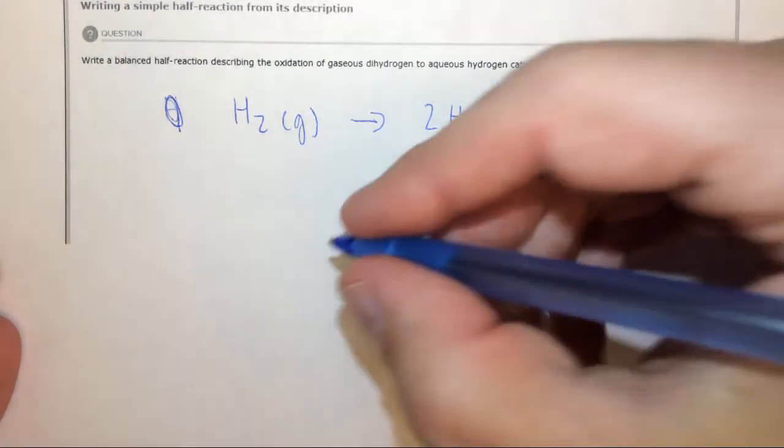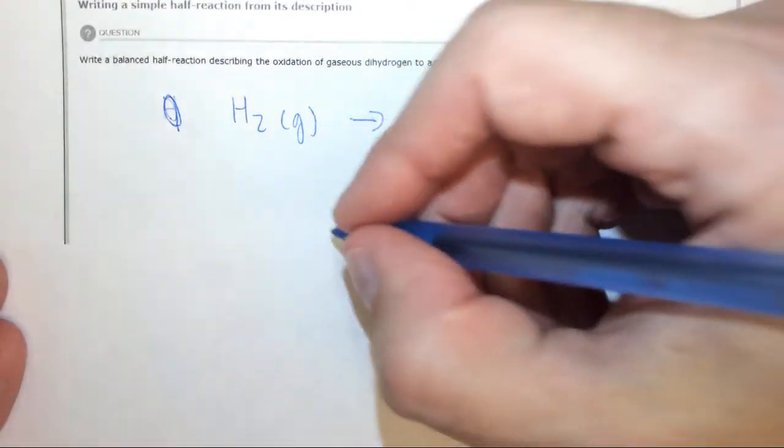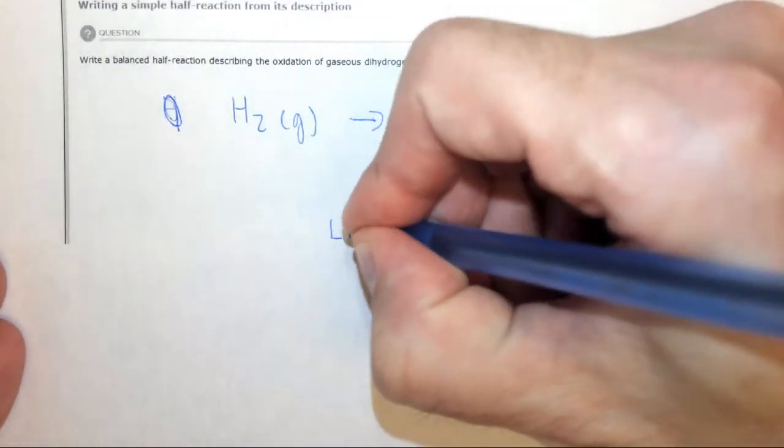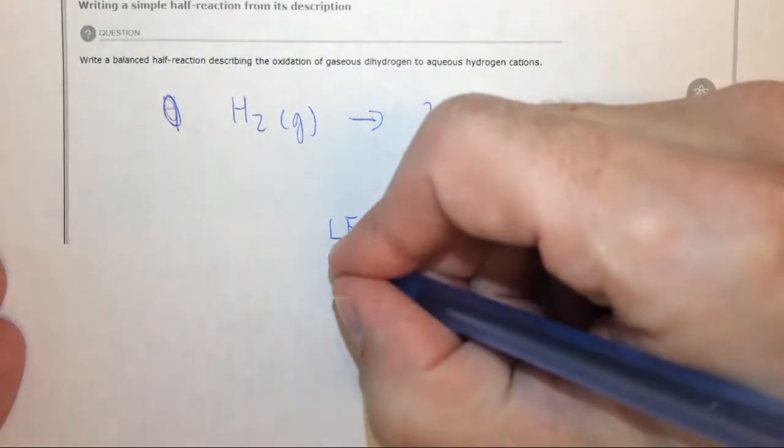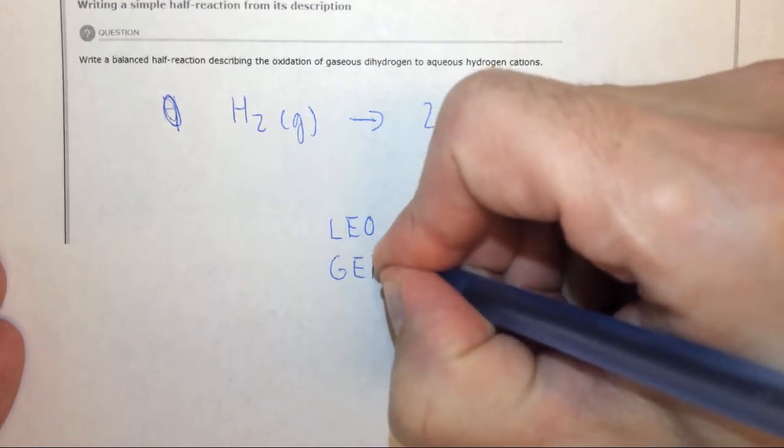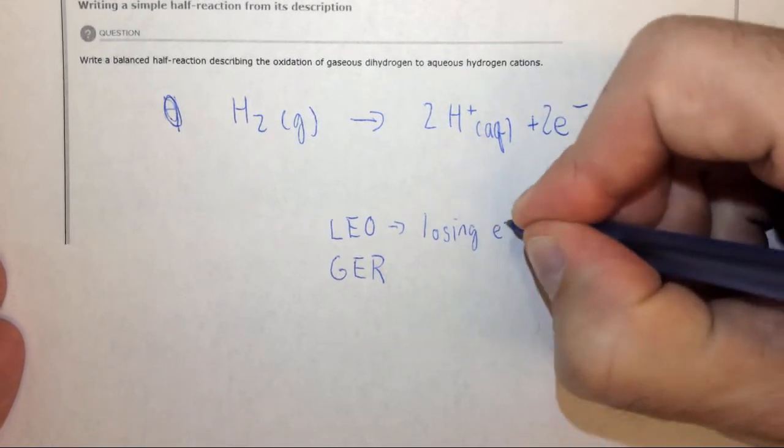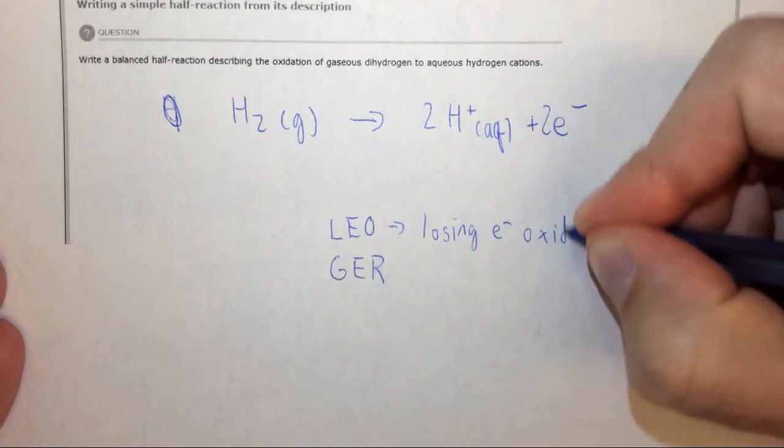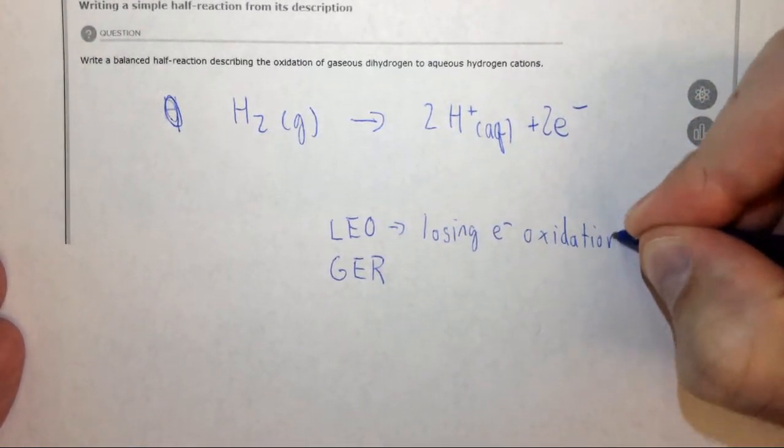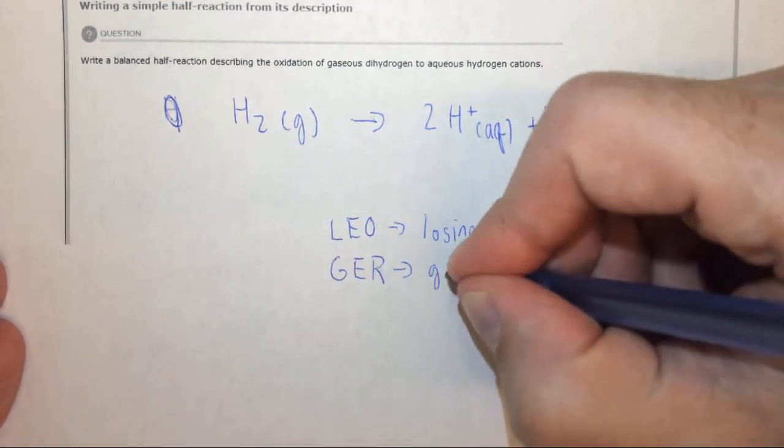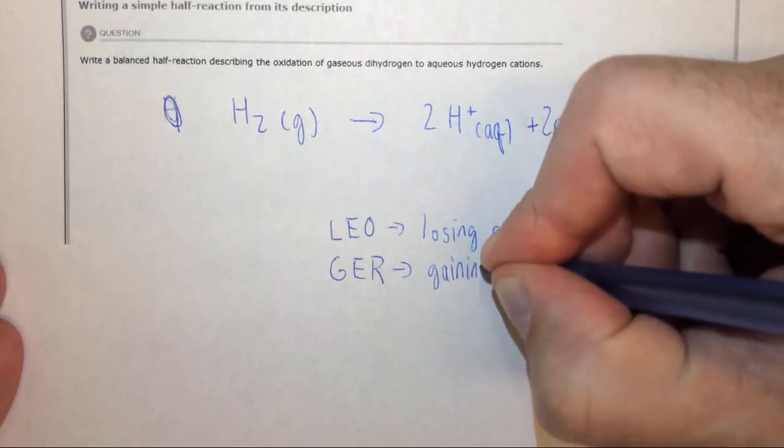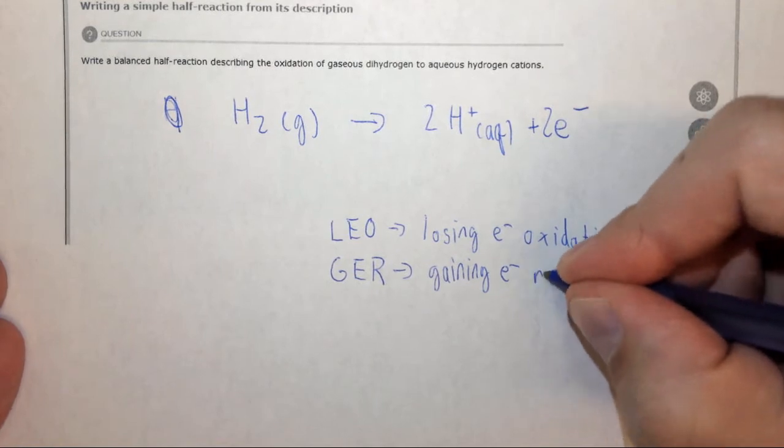Remember your mnemonic device: Leo the lion says GER. LEO means losing electrons is oxidation, and GER is gaining electrons reduction.